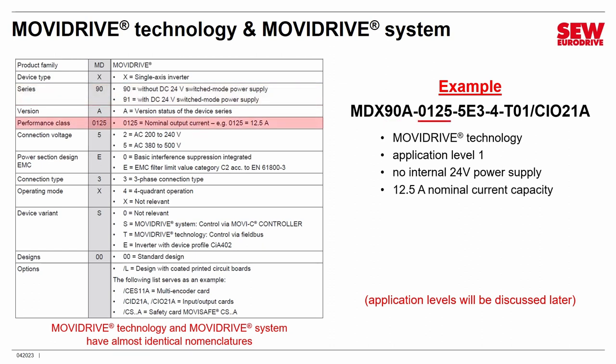The 0125 is a very important number — it tells you how many amperes the device can supply, in other words its capability and what kind of motor you could connect to it. SEW always places an imaginary decimal point between the last two digits, so 0125 actually means 12.5 amperes. Next, a number indicates the operating voltage: in this case a 5 means it operates on 380 to 500 volts, so probably 460 to 480 — very common in industrial settings.